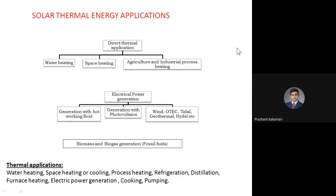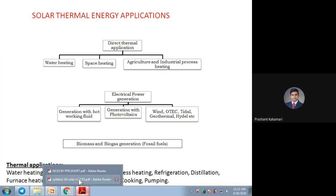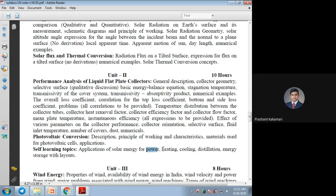Different applications of solar energy: first, direct thermal applications — heating or cooling. Water heating, space heating of buildings, and agricultural or industrial applications need direct thermal energy. Other thermal applications include process heating in chemical industries, refrigeration, distillation, furnace heating, electric power generation, cooking, and pumping. As per our syllabus, we will focus on power generation, heating, cooling, distillation, and energy storage.